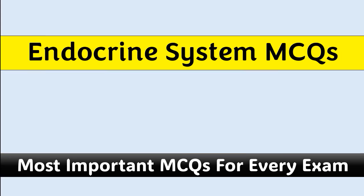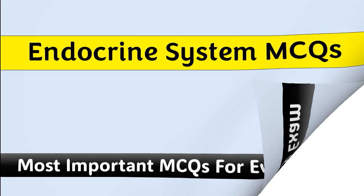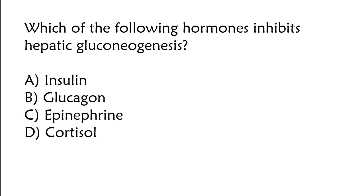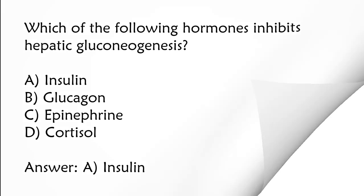Endocrine system MCQs. Which of the following hormones inhibits hepatic gluconeogenesis? Insulin, glucagon, epinephrine, cortisol. The correct answer is Option A: Insulin.